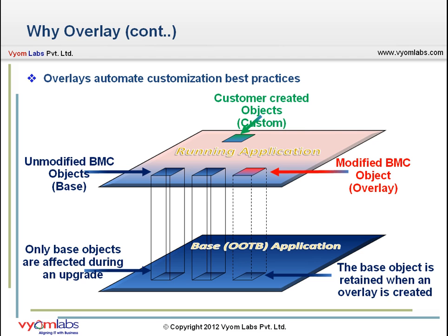In the worst case, objects may be overwritten after an upgrade if best practices are not followed. Now in 7604 onwards, changed objects are upgraded and customizations are preserved. The Developer Studio does not allow changes to the base application — the application can only be extended with custom objects or overlays. After an upgrade, you can choose to accept new functionality, stay with customizations, or merge the two. The worst case is that the application will work exactly as it did before the upgrade.